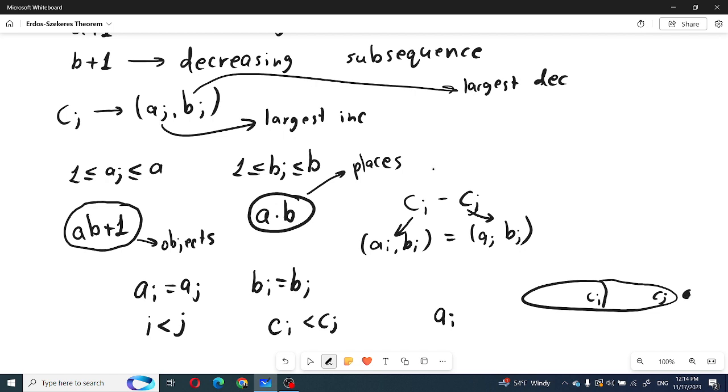The largest increasing subsequence which ended at point i has length a_i. And if we look at the point C_j, we know that C_j is more than C_i, so a_j will be at least a_i plus one.